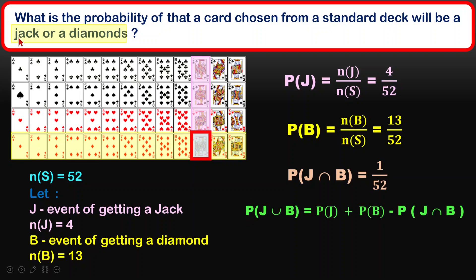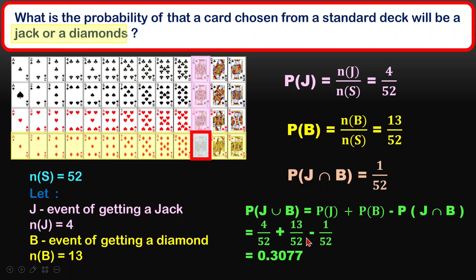The question asks for probability of jack or diamond, so J union B. We get P(J) + P(B) - P(J∩B). We can press the calculator to get decimal places, or calculate in fraction form. Please remember you need to simplify if you have a fraction. That is example number 1.